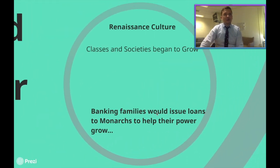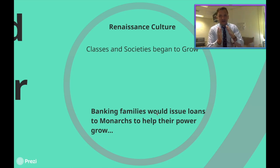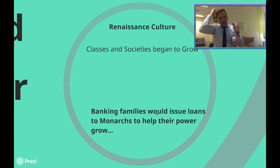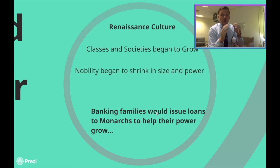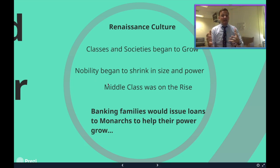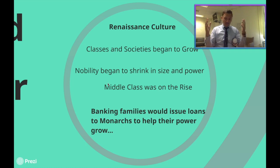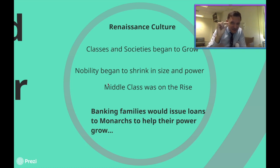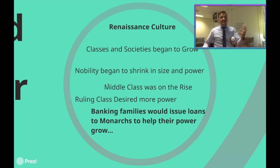Renaissance culture continued to grow and as it grew, classes and societies did begin to shift a little. There's a small, tiny little middle class trying to grow — mostly made up of guild members and merchants. Surprisingly, the nobility class is starting to shrink a little bit. A lot of that has to do with the fact that kings want more power. Underneath, the nobility is beginning to shrink because kings want more power — and this is a big part of that new monarchies construct.